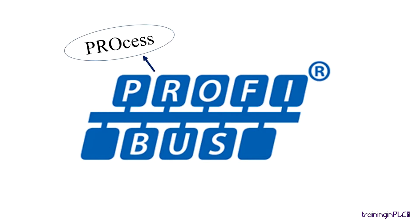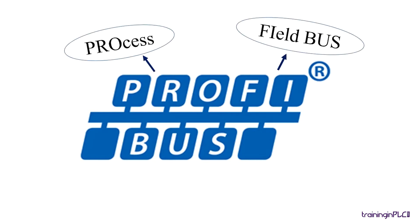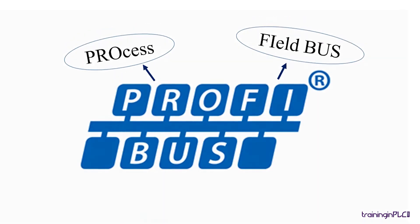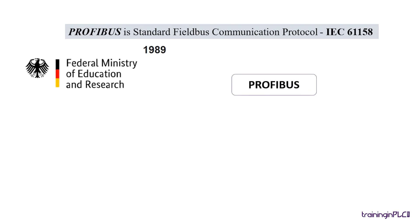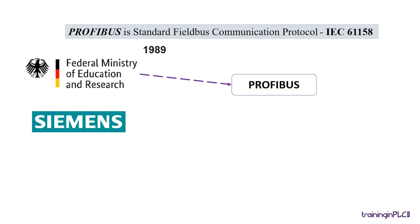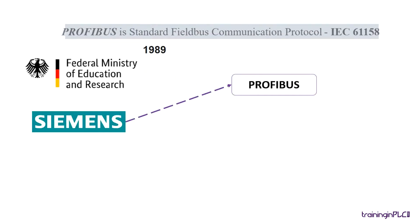PROFIBUS means Process Field Bus, and is a standard communication in automation technology. In 1989, by the German department BMBF, Federal Ministry of Education and Research, promoted the use of PROFIBUS, then later it's used by Siemens and is published as part of IEC 61158.